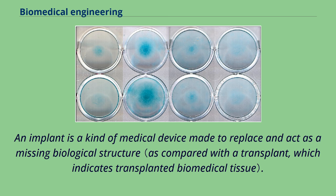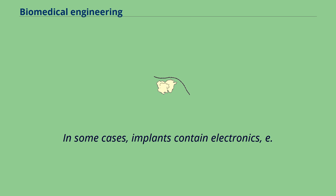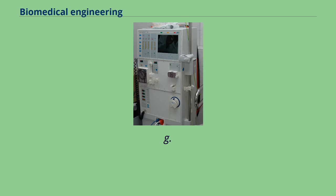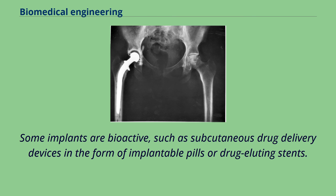An implant is a kind of medical device made to replace and act as a missing biological structure. The surface of implants that contact the body might be made of a biomedical material such as titanium, silicone, or apatite depending on what is most functional. In some cases, implants contain electronics, e.g. artificial pacemakers and cochlear implants. Some implants are bioactive, such as subcutaneous drug delivery devices in the form of implantable pills or drug-eluting stents.